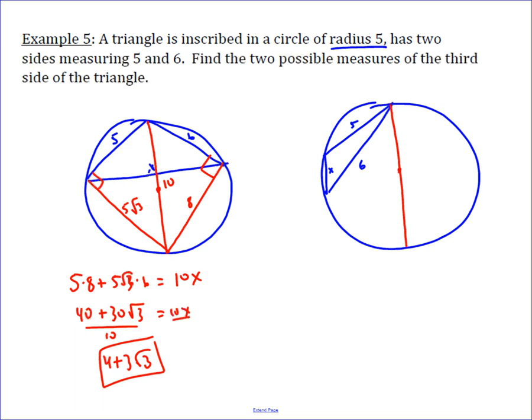then if we were to draw in these two to the same point, they also give us right angles. This is still 10, this is still 5 root 3.